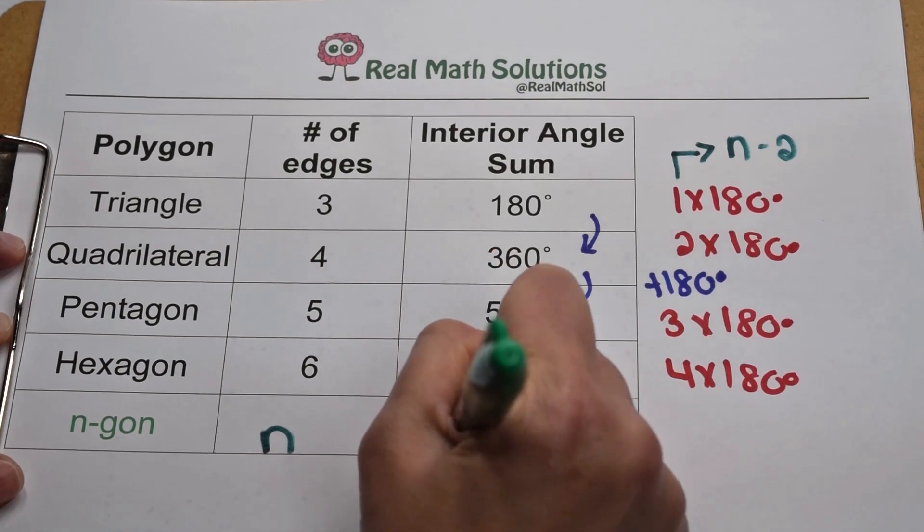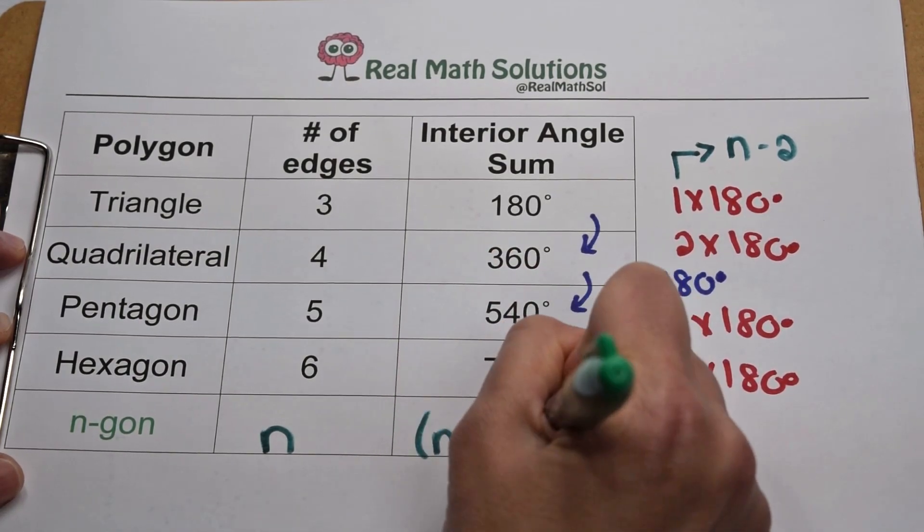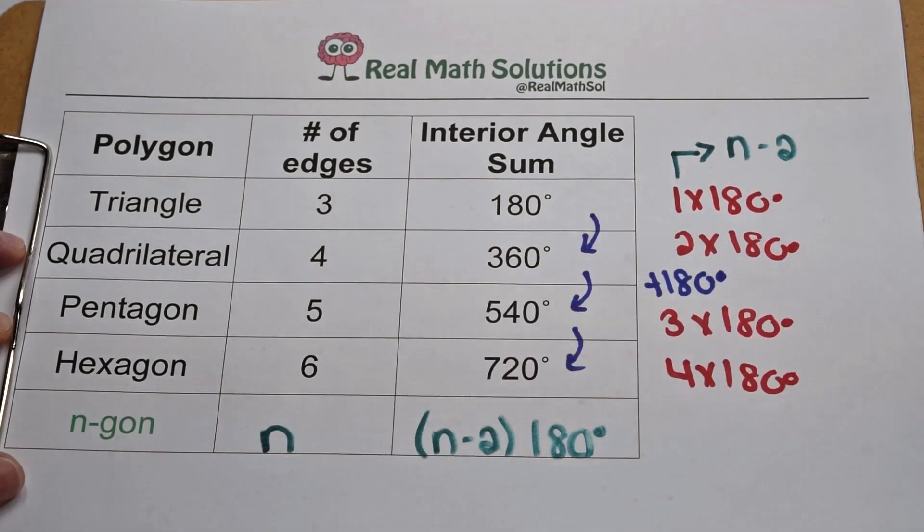So no matter if we're dealing with regular polygons or irregular polygons, we're going to be able to use the same equation to find their interior angle sum. Number of sides minus 2 multiplied by 180.